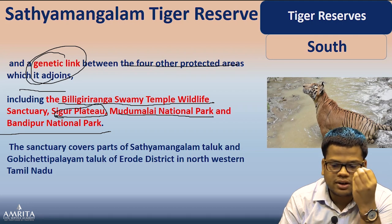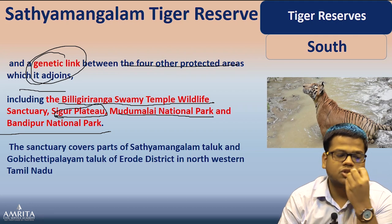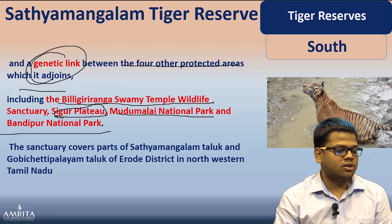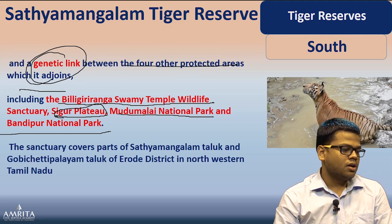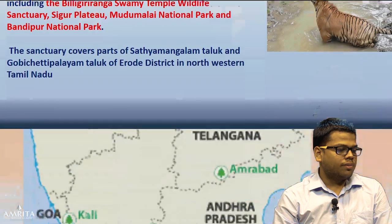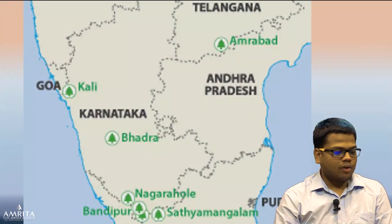Satyamangalam Tiger Reserve is in the Erode district of Tamil Nadu. It is a significant wildlife corridor between the Eastern Ghats and the Western Ghats. Very importantly, it is a genetic link between four protected areas: Biligiriranganatha Temple Wildlife Sanctuary, Mudumalai National Park, Bandipur National Park, and Sigur Plateau. All these places are so nearby that UPSC has asked questions on their relative locations.